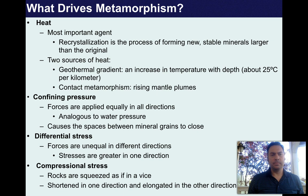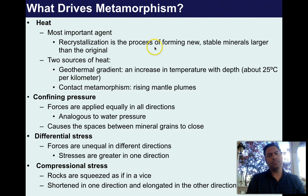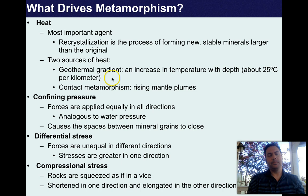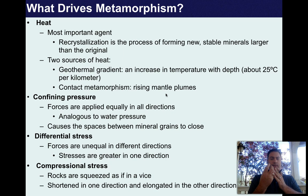What drives all of this? Heat is the most important agent. Recrystallization is the process of forming new stable minerals larger than the original. Two sources of heat: the geothermal gradient — an increase in temperature with depth of about 25 degrees Celsius per kilometer — and contact metamorphism, where rising mantle plumes bring molten rock into contact with cold rocks in the Earth's crust. It's like putting a blowtorch right on the rocks.